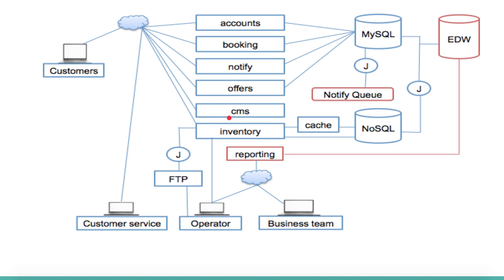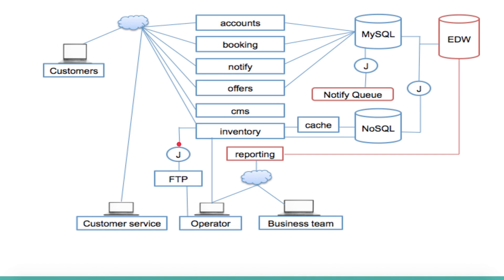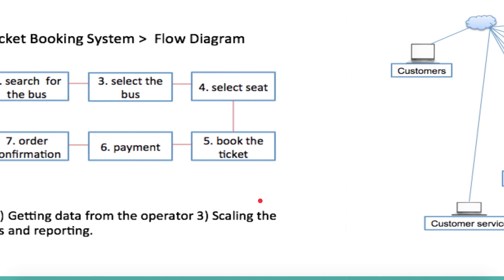Now think about a case where multiple data sets are coming from different operators across the country and we want to make sure all data gets into the system correctly. We need a very good validation mechanism. Once the data comes into the system, we parse it and make sure all the data is valid before feeding it into the inventory. Otherwise, duplicate, missing, or inefficient data will directly reflect to customers and break the system. That's why we need an excellent validation engine.